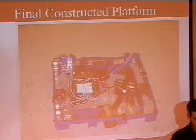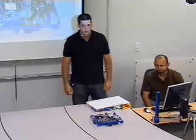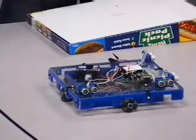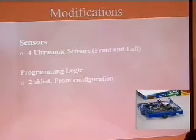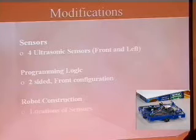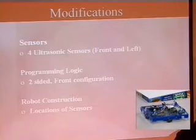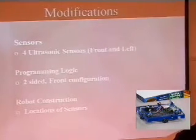This is the final constructed platform — custom-made, built in the shop from Plexiglas. We had to use just four ultrasonic sensors because the other four burnt out, and the IR sensors required A-to-D converters which we didn't have. With the modifications, we only used four sensors — two in the front, two on the left. The programming logic has the front always facing the direction of travel. The ultrasonic sensors had to be moved to the top of the platform since they were the only sensors we could work with.